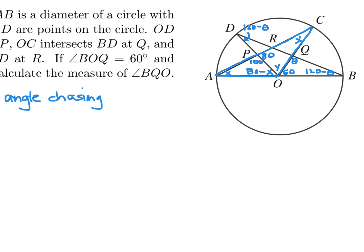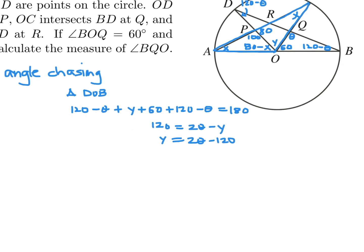Okay, I did a bunch of labeling there. Now let's see what I can do. Let's start with triangle DOB. In that triangle, we have angles 120 minus theta, plus Y, plus 60, plus 120 minus theta, and that all has to equal 180. So when you do this math, you get 120 is equal to 2 theta minus Y, or you can just put Y is equal to 2 theta minus 120.